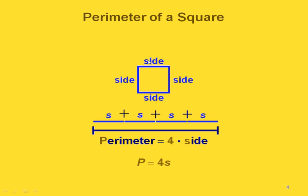Now if we have a square, that just means we have a rectangle where all four sides are the same length. We're just adding up the length of that side four times, so the perimeter equals four times the length of the side. We have the formula P equals 4S.